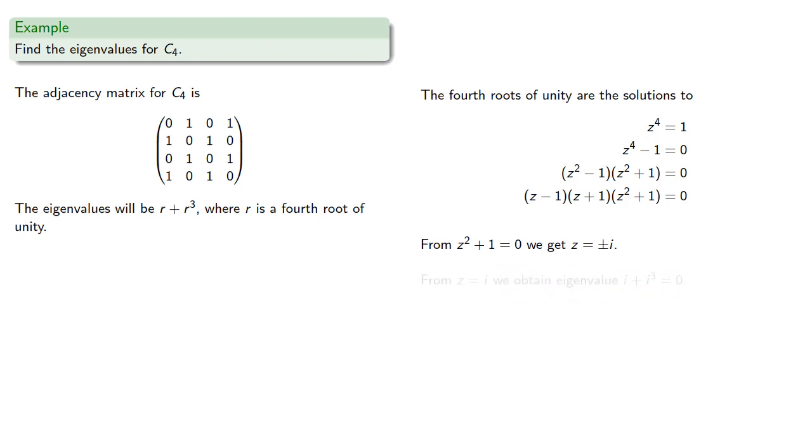From z equals i, we obtain the eigenvalue i plus i cubed equals 0, and the eigenvector, which includes the powers of i.